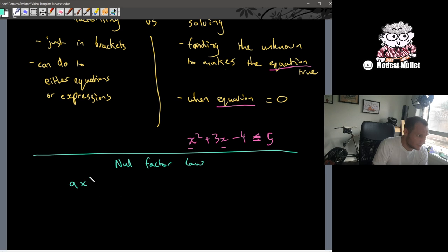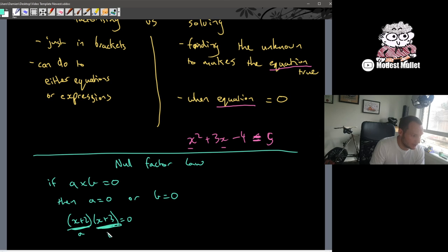Which says any two things multiplied together, doesn't matter what they are, if they equal zero, then a equals zero or b equals zero. Most of the time we see it in the form of maybe x plus 2, x plus 3 equals zero. This bit here, that's our a. This bit here is our b. Either the x plus 2 is equal to zero, or the x plus 3 has to be equal to zero. One of those two cases has to be true.